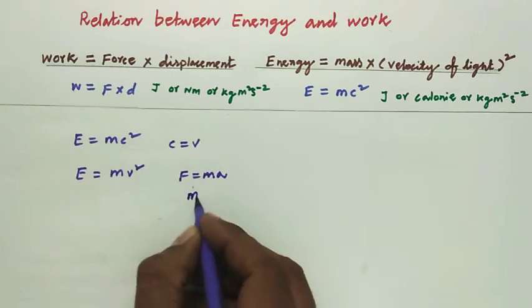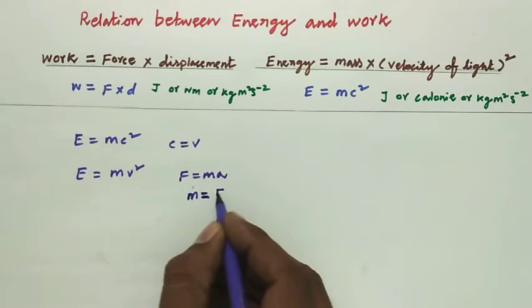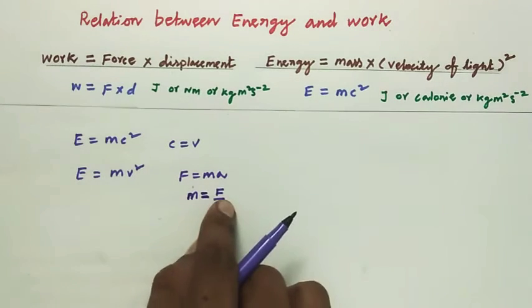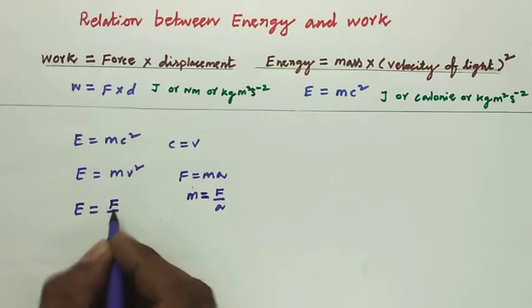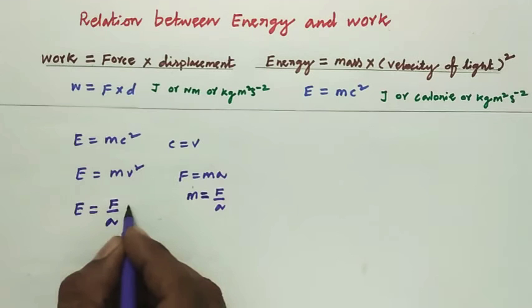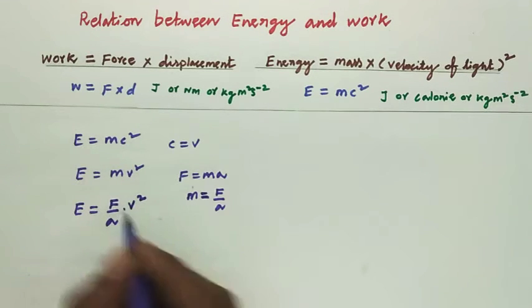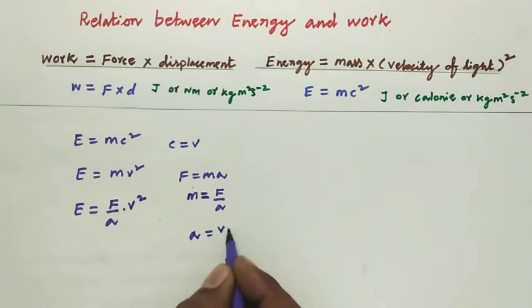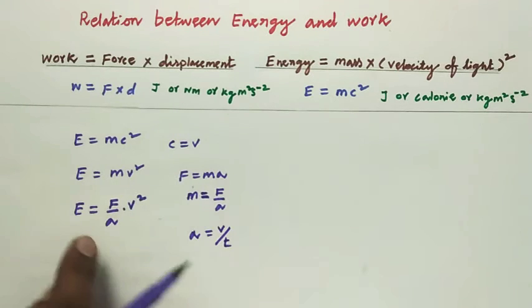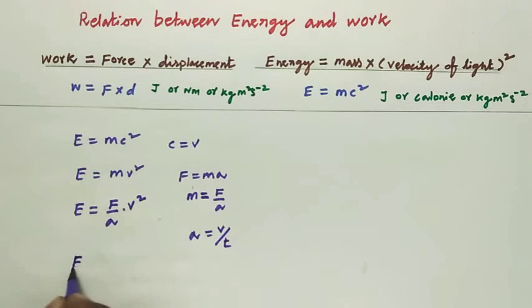Therefore, mass equals force by acceleration. Now we replace it: E is equal to F by a times v square. You know acceleration equal to velocity by time taken. Now we replace this: E equal to F by velocity into time taken, times v square.